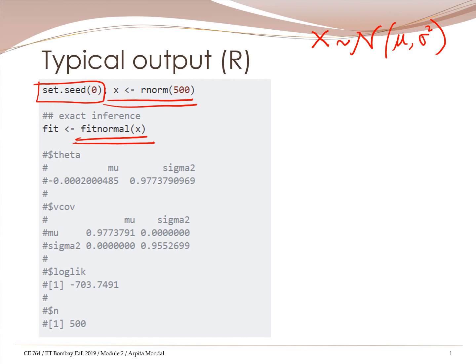This would give the output of theta, which is the estimated parameter set, and the VCov — that's the variance-covariance matrix of theta. Theta in this case has two values, mu and sigma square, and those are given by these numbers from the 500 random numbers generated from the normal distribution.